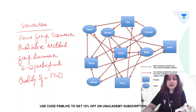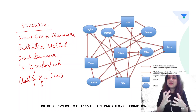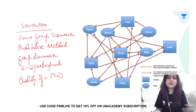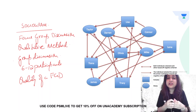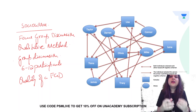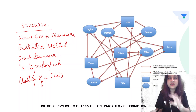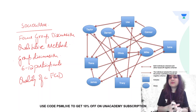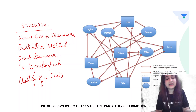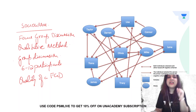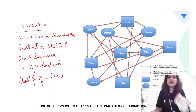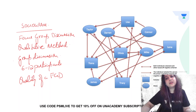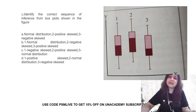Why is it important for collecting qualitative data in an FGD? Because when we have certain issues — like why is addiction more in a community — we cannot just get a questionnaire filled. We have to get to the depth of that problem. In that case, we conduct an FGD and draw a sociogram. So the sociogram reflects the quality of an FGD.